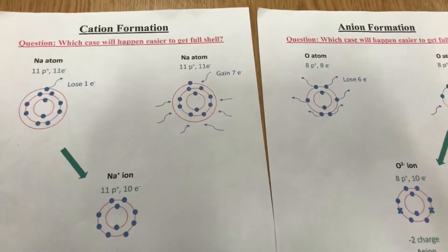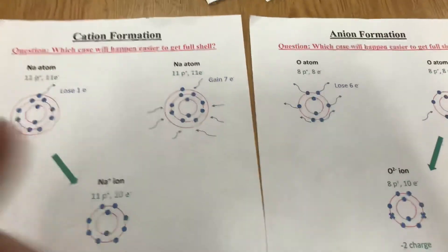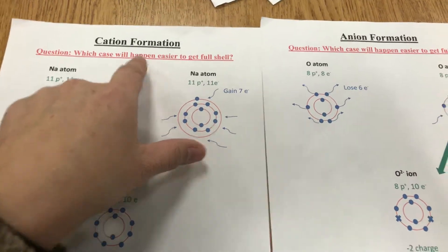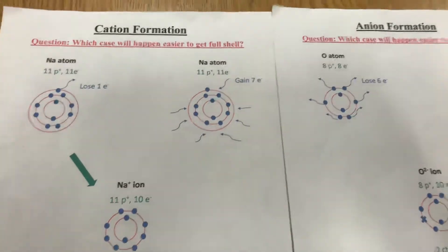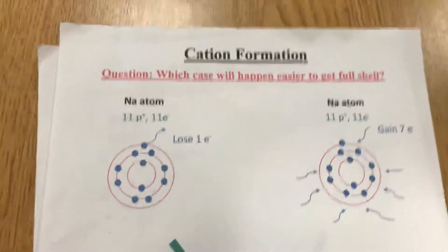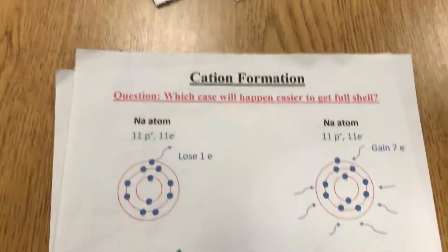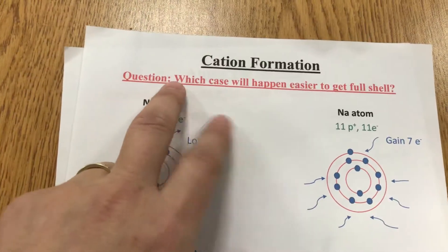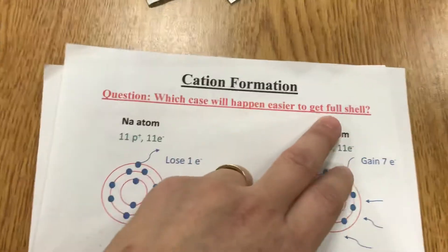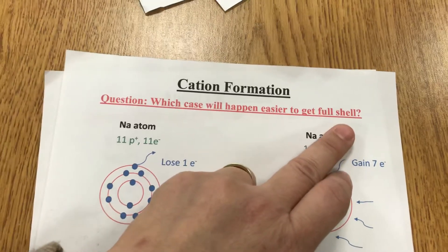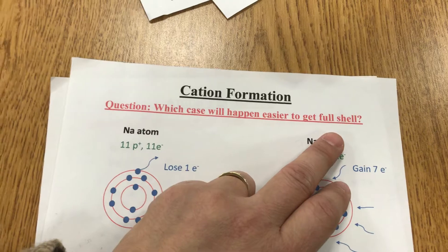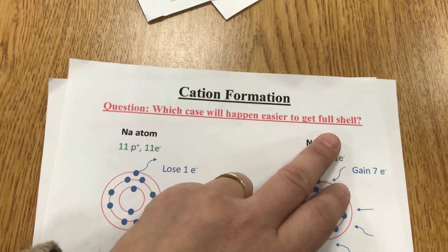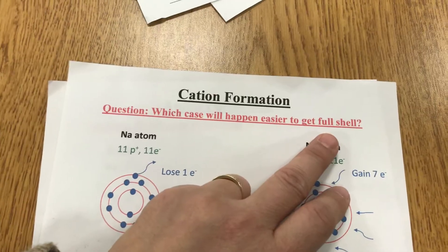In this video I'm going to talk about two things: cation formation and anion formation — how they are formed visually. So let's concentrate and look at the cation. Now how do cations form? We want to first ask the question: which case will have been easier to get a full shell? What I mean by full shell is they follow the octet rule, meaning all the electrons want to get enough valence electrons in order to get to the noble gas state. So they want to get a full shell because they want to get stable.